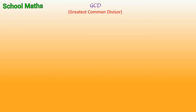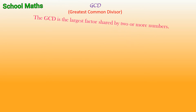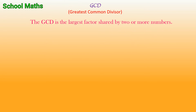GCD is an abbreviation of Greatest Common Divisor. Be ready, let us start. The GCD is the largest factor shared by two or more numbers.